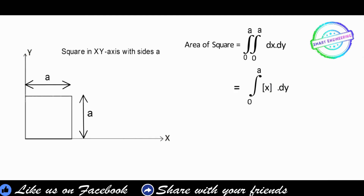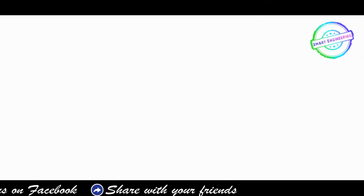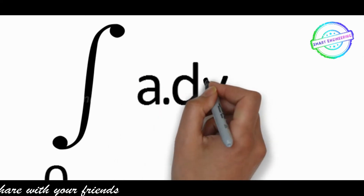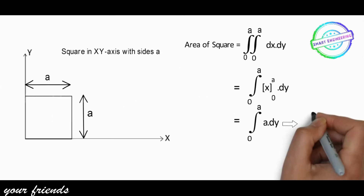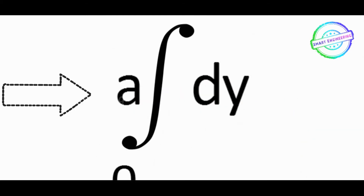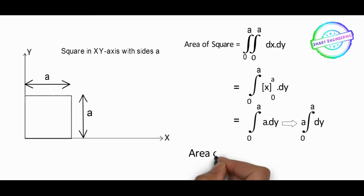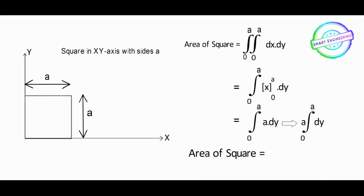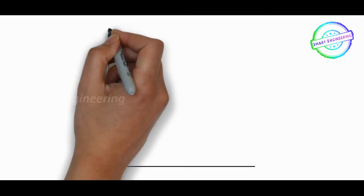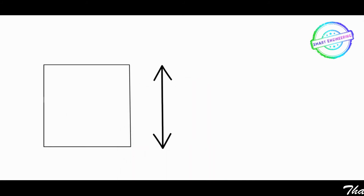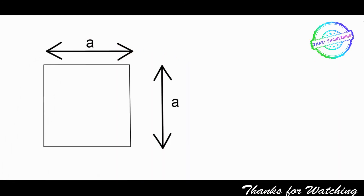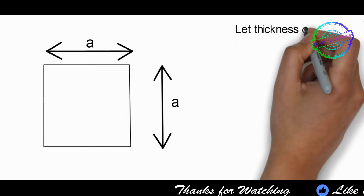Using the integral formula, dx integrates to x. x varies from 0 to a, so substituting the limits gives x equal to a. Therefore the result is a squared, confirming the area of the square with side a.